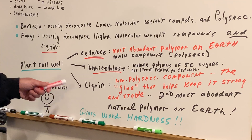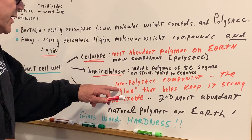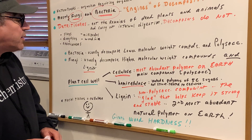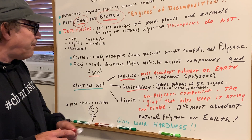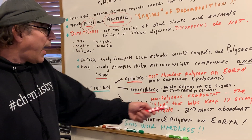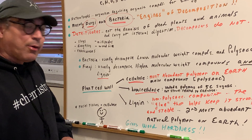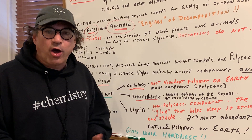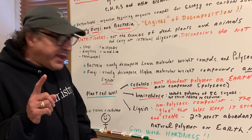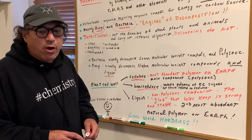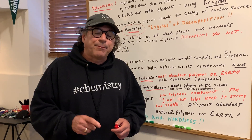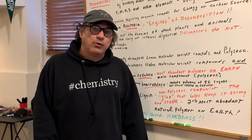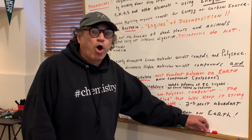Another component of plant cell walls is lignin — this is a dangerous question that will be in next year's Destroyer book. Lignin is the non-polysaccharide component; it's the glue that helps keep the cell wall together and stable. Lignin happens to be the second most abundant natural polymer on Earth, and it also gives wood its hardness. You might think cellulose gives the hardness — that's wrong. Consider a tissue you'd wipe your face with: it's soft, and it's cellulose. Lignin is what gives the hardness.